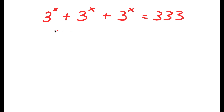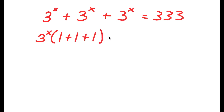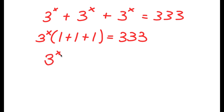In this problem, I have 3 to the power of x plus 3 to the power of x plus 3 to the power of x is equal to 333. The first thing I'm going to do is factor out 3 to the power of x from the left-hand side. So now I have 3 to the power of x times 1 plus 1 plus 1, which equals 333. Since 1 plus 1 plus 1 equals 3, I get 3 to the power of x times 3 equals 333.